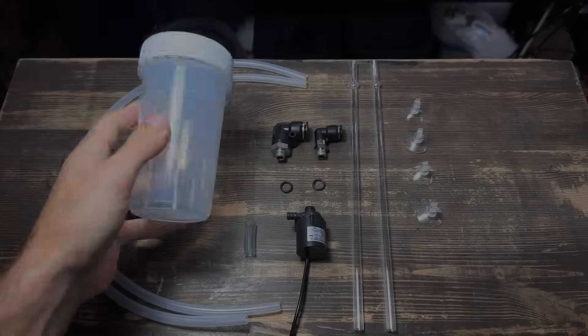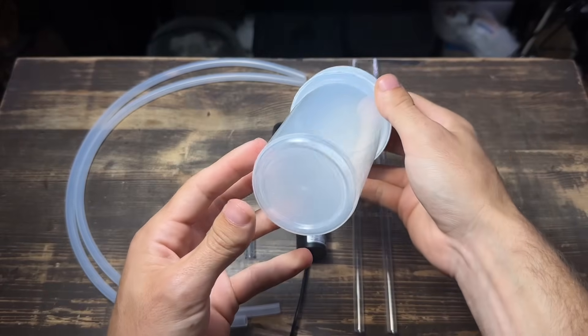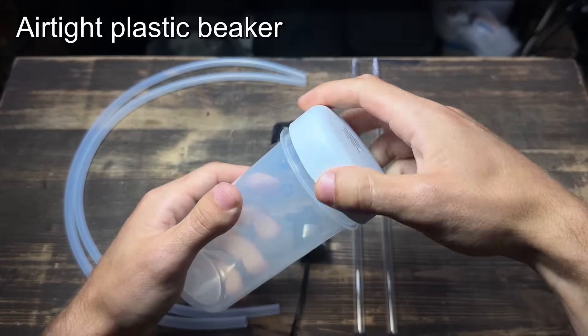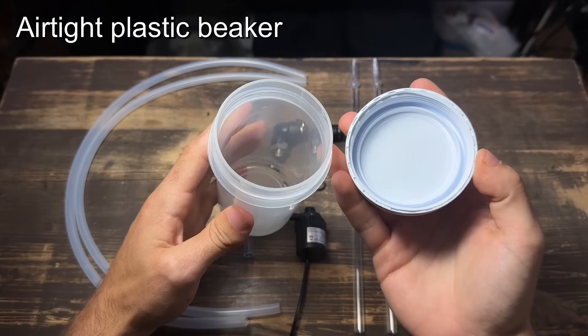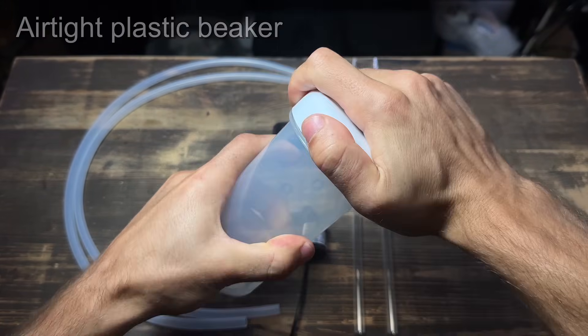Let's get straight into it with what materials you'll need. Firstly you're going to need an airtight container that will be the main body of the canister filter. This is a small plastic beaker that only costs about two pounds.